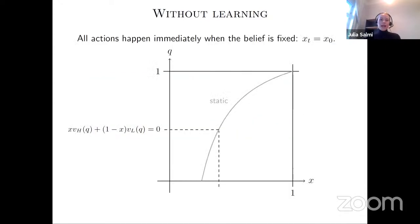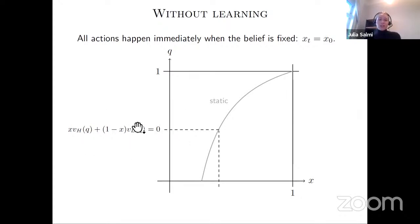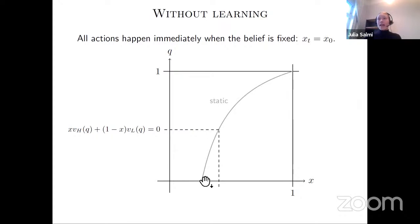Before showing the planner's problem, let me show the most simple policy: the optimal stopping pattern when we have no information. In that case, both socially and individually, the optimal thing is that everyone with a positive expected stopping payoff stops immediately and no one else ever stops. This solution is fully static. We can describe it as a cutoff policy. This will be our no-learning benchmark.